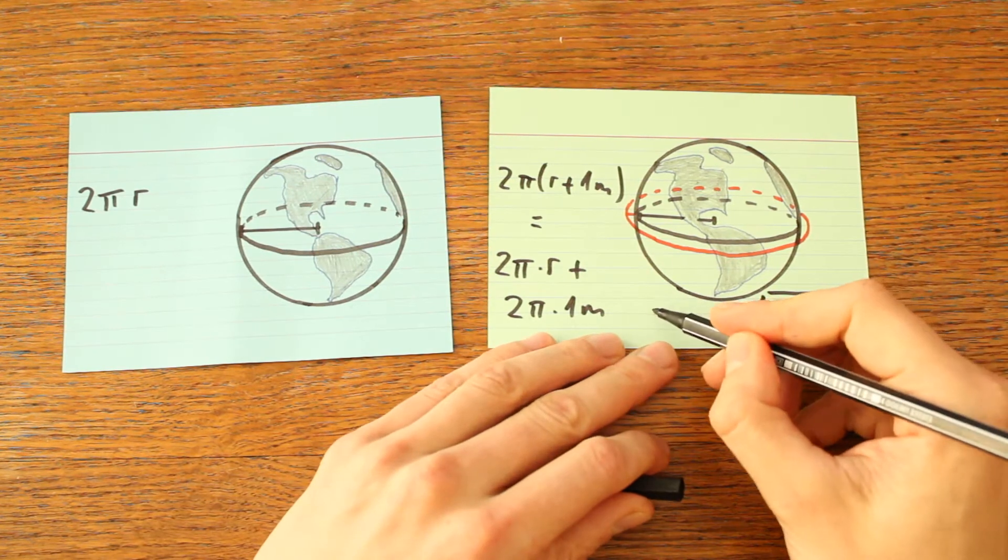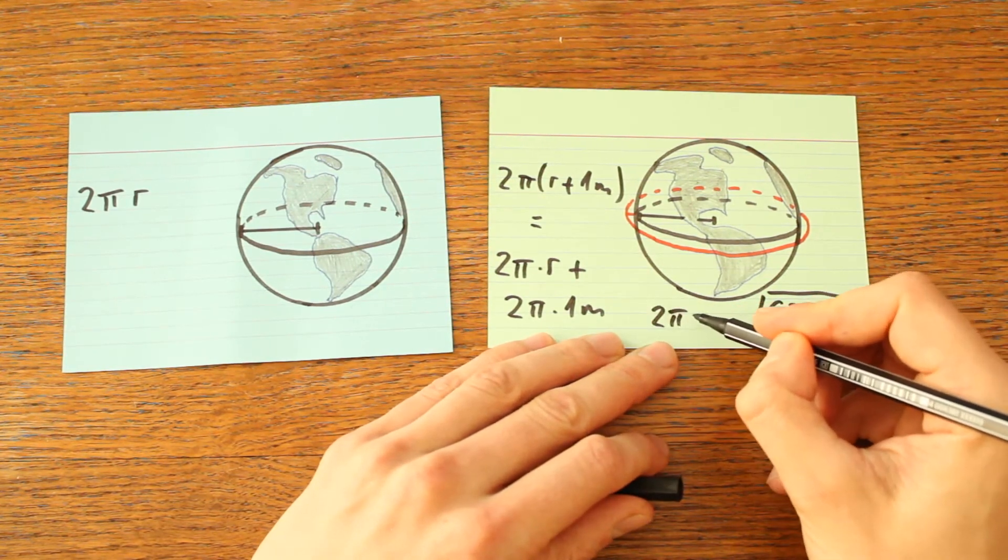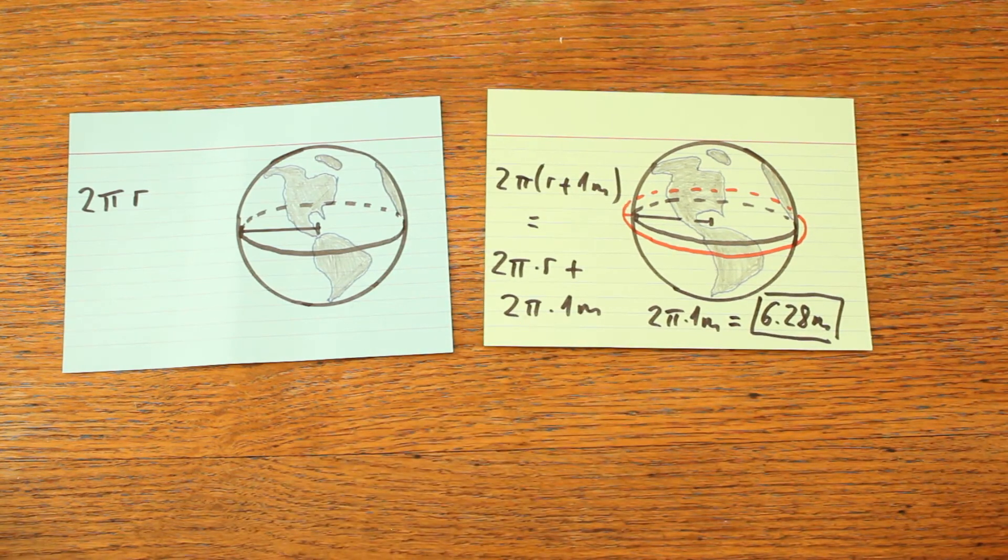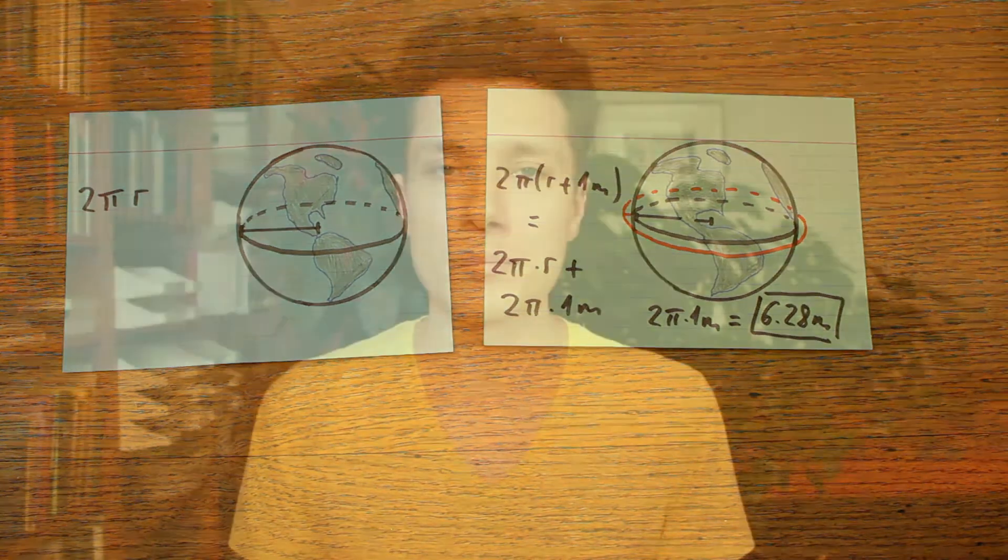And it all comes down to the formula and that's linear in r. It's 2 times pi times r. So it doesn't matter what radius you start out with, as long as you increase the radius by 1 meter, the circumference is always going to increase just by around about 6.28 meters, 2 times pi. And it doesn't matter if your original circle just had a radius of 1 meter or 6400 kilometers, no difference.